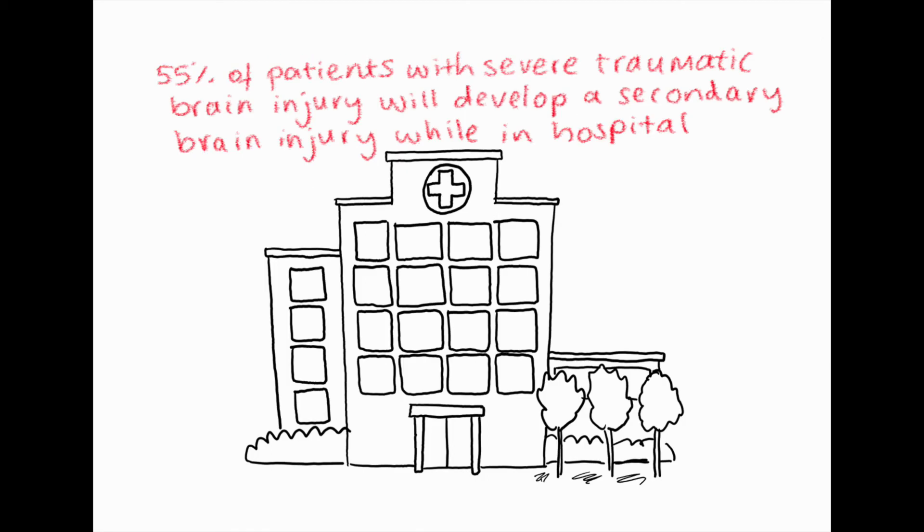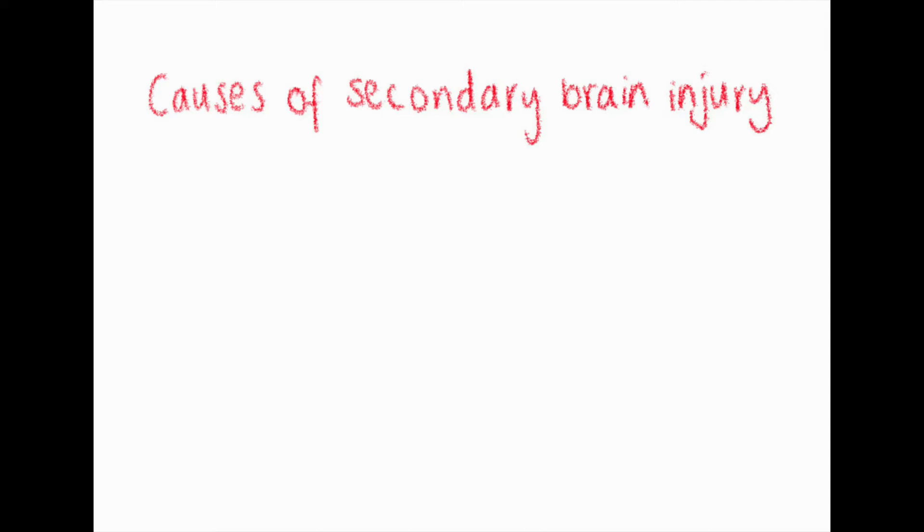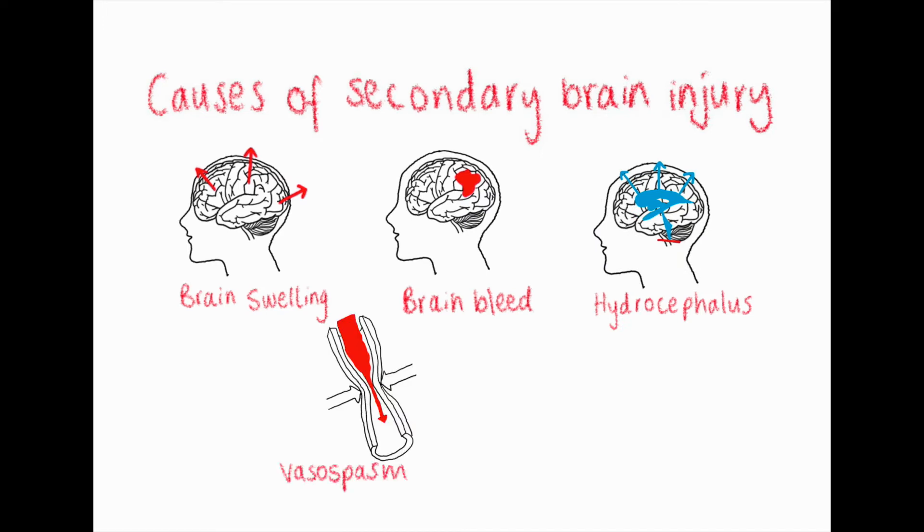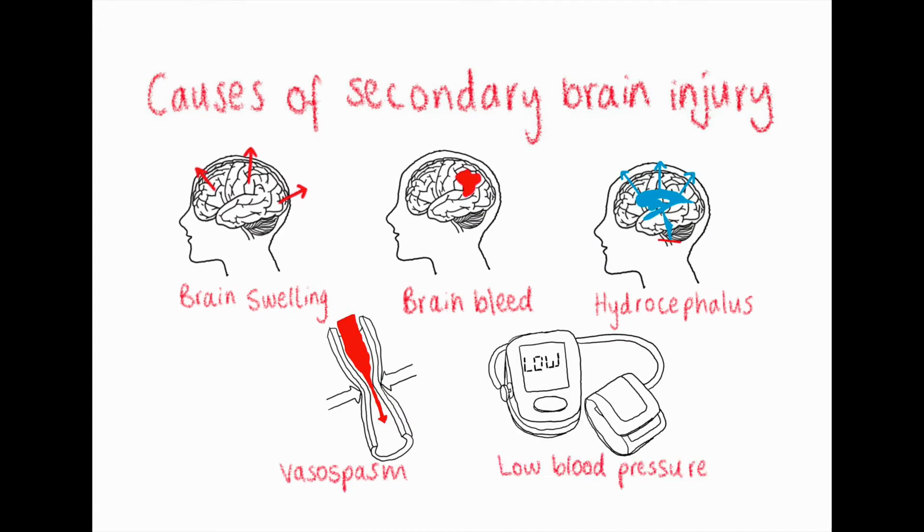People with severe TBI are at higher risk of developing secondary brain injury while in hospital, occurring in 55% of patients. The complications that may result in secondary brain injury are inflammatory brain edema, a bleed in the brain, hydrocephalus caused by blockage in the brain ventricular system, vasospasm of a major cerebral artery, and low blood pressure in the setting of traumatic injuries elsewhere in the body.